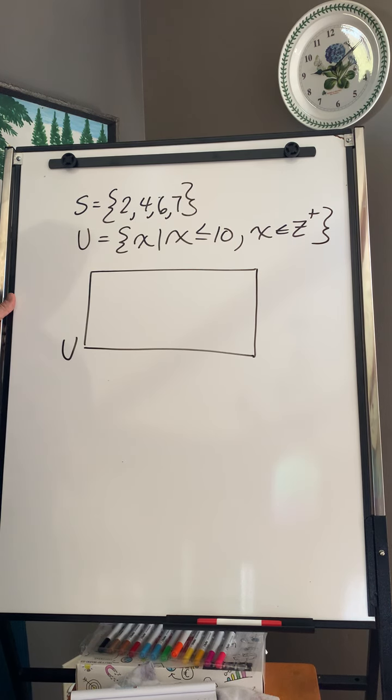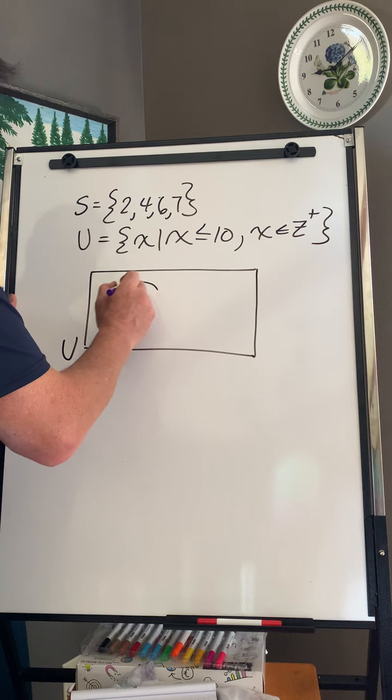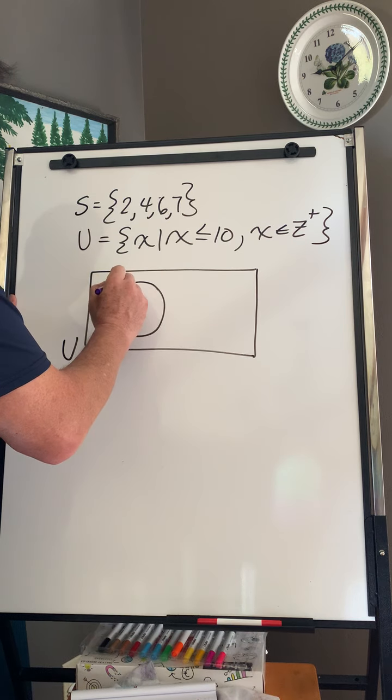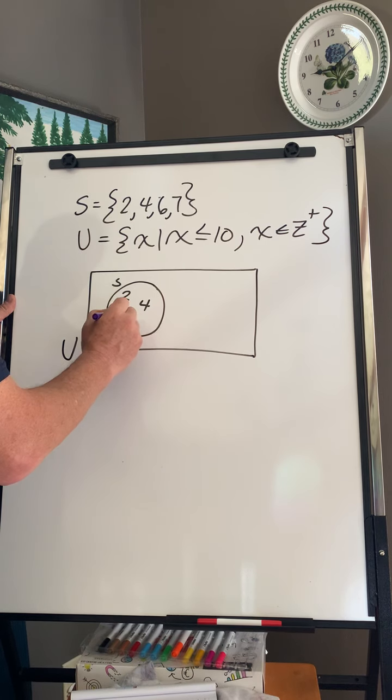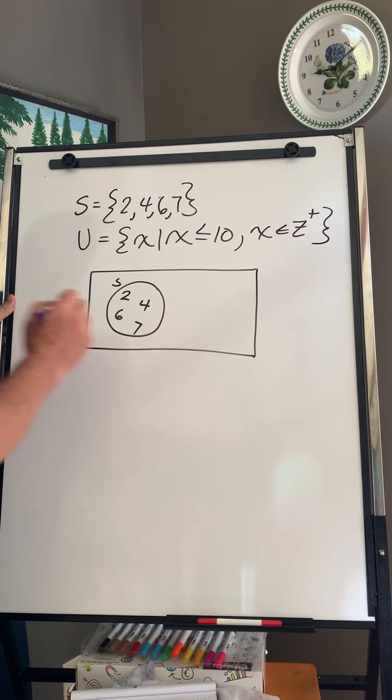Now, within that, we have a subset. We have a set S. And all the members of S go in that circle: 2, 4, 6, 7.